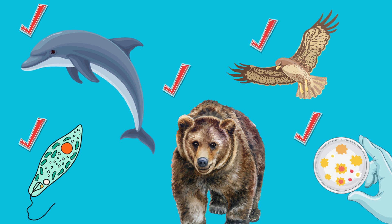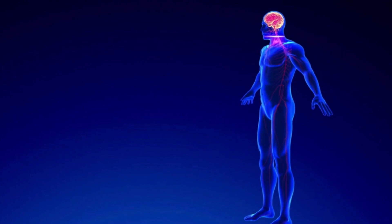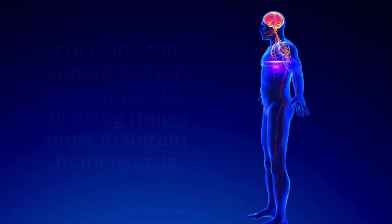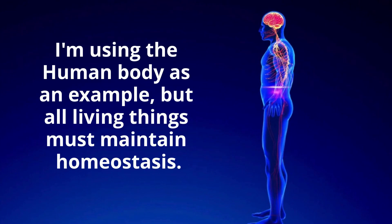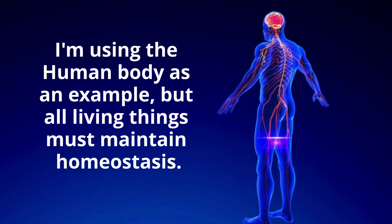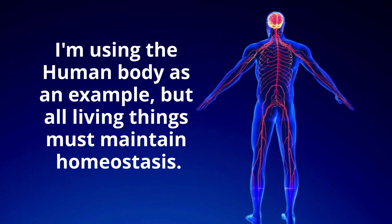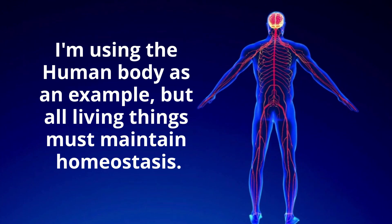Let's take a look at how the body does this. Homeostasis is a complex process that involves the coordinated activity of many different organs and systems. Here are some examples.